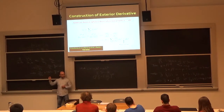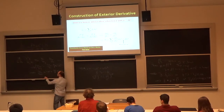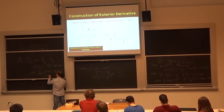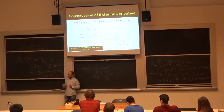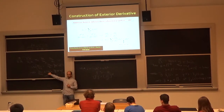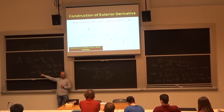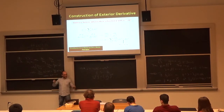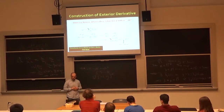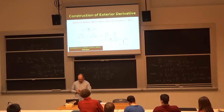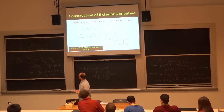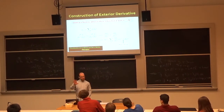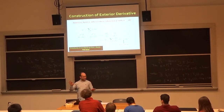The exterior derivative d of a one-form is defined by: for each coefficient alpha_i and each coordinate x_j, differentiate and wedge with the corresponding dx_j. This is the exterior derivative. It provides a condition under which a k-form is d of a k-minus-one form: d of a one-form equals zero if and only if the one-form is locally exact.